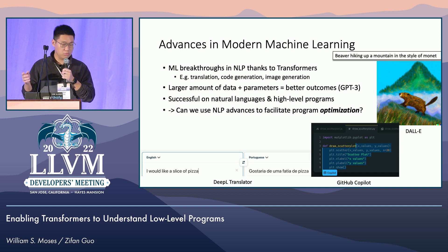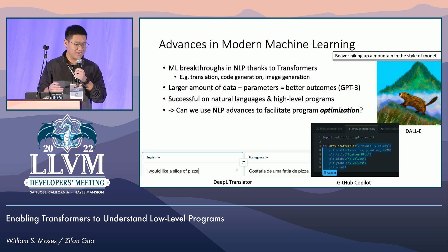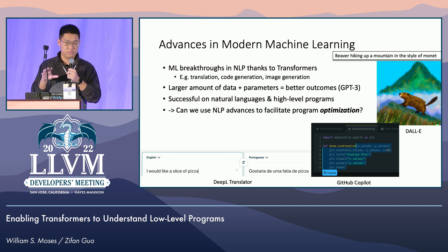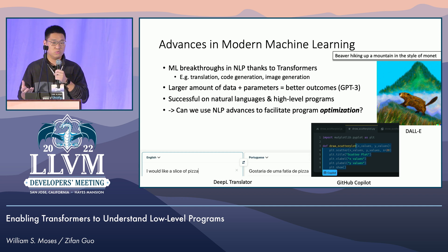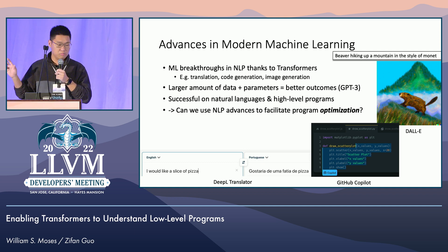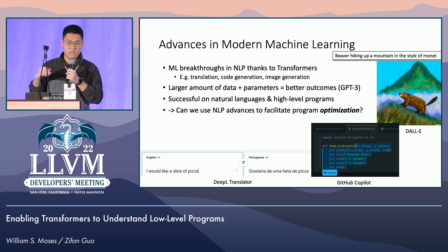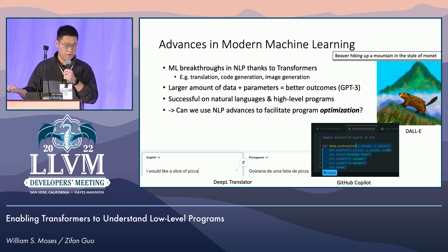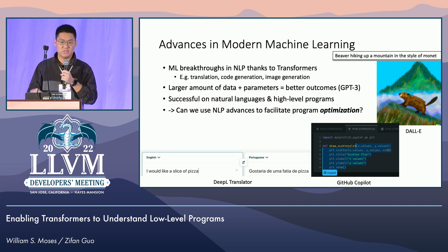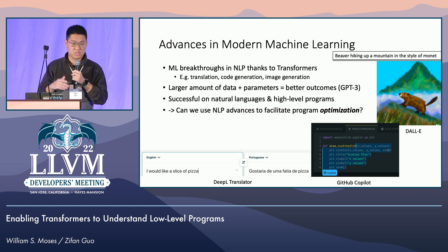There are some other tools like translators and GitHub Copilot. Those breakthroughs in the field of natural language processing are due to this model called transformers. Transformers essentially allows you to take a lot larger amount of data and a larger amount of parameters because they can train really fast, and that results in better outcomes. That's how most of the breakthroughs have come to place in the last two years.